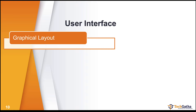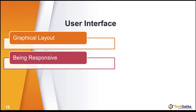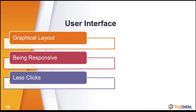User interface is more about the layout, the design — what goes where, how many clicks are needed to reach a functionality. For example, if I want to search for a list of something, how many clicks do I need, how many fields do I have to fill, are there autocomplete features — all these fall under user interface. It must also be responsive.